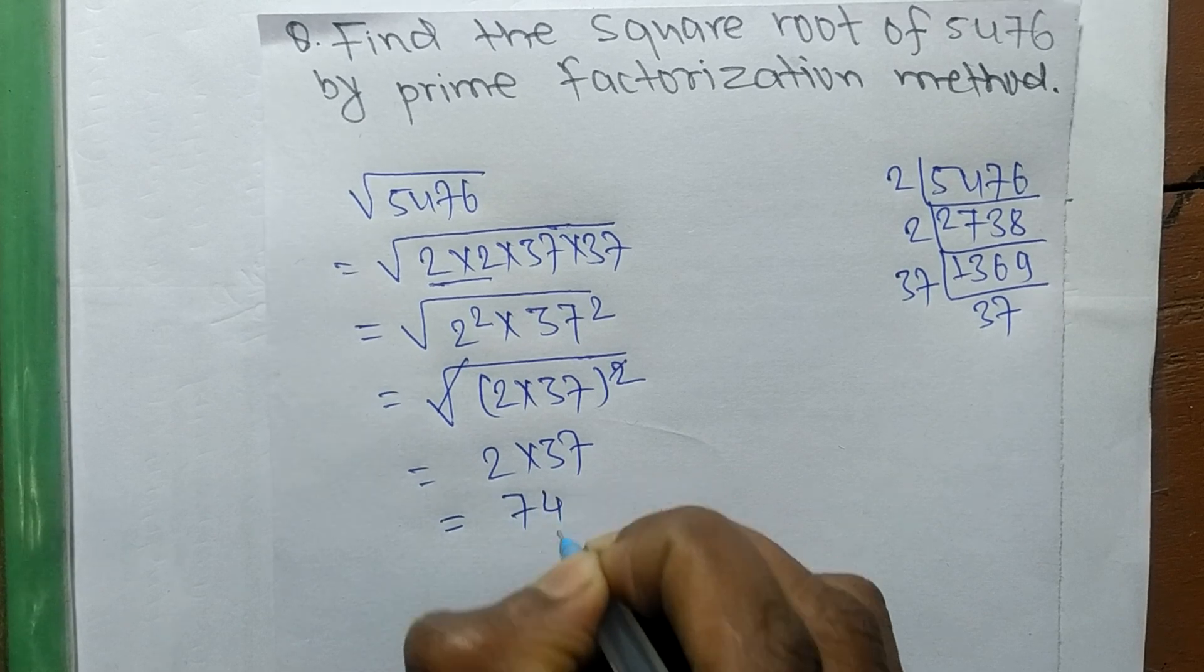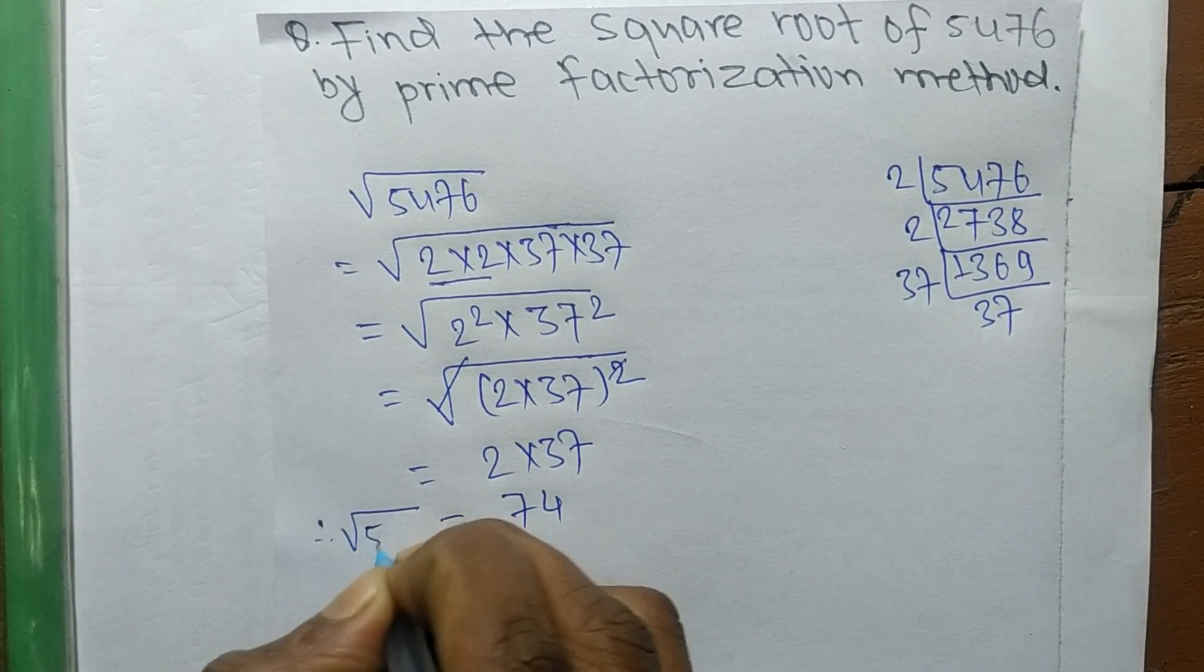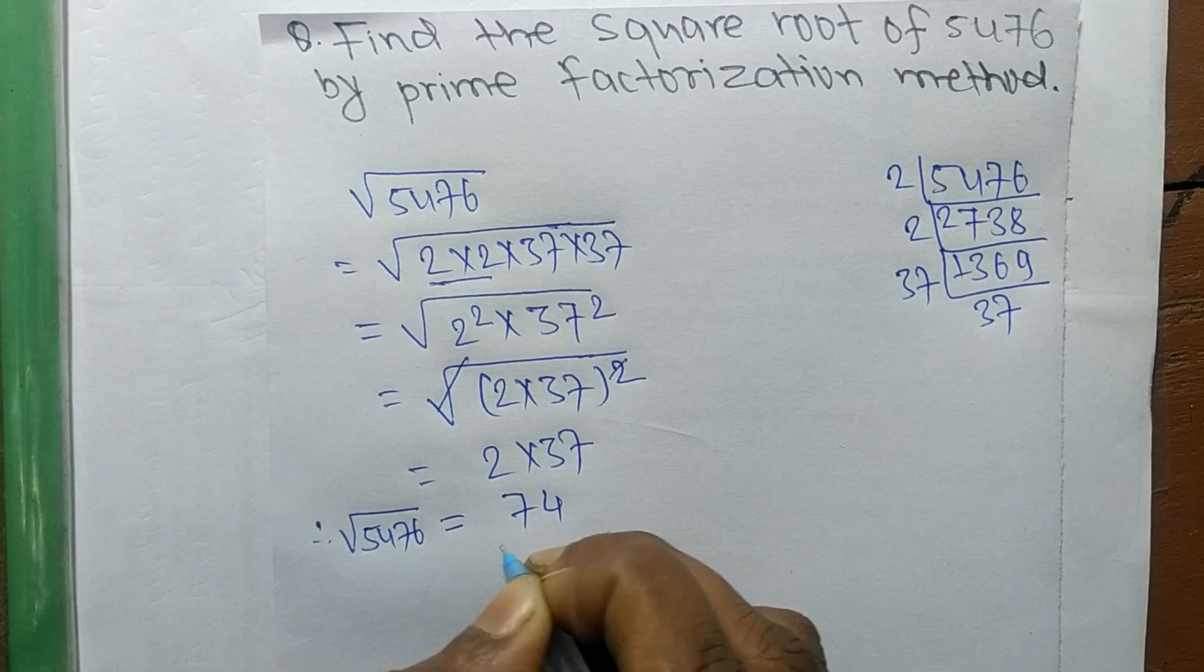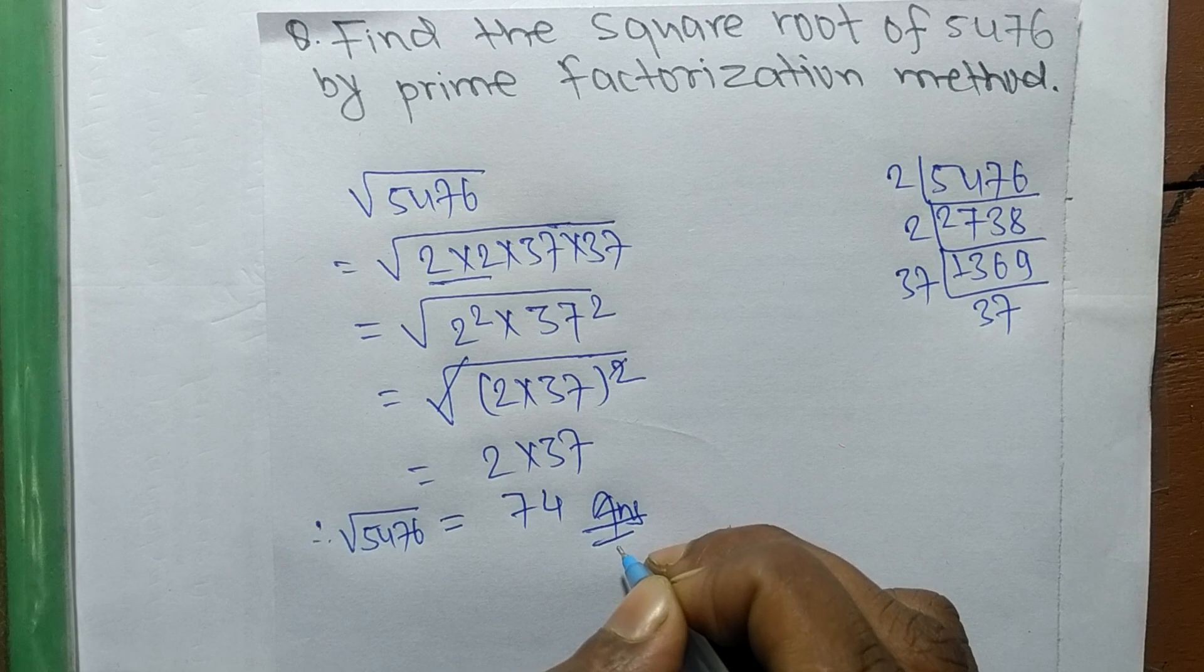So it is equal to 74. Therefore the square root of 5476 is equal to 74.